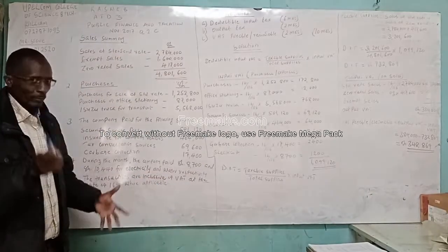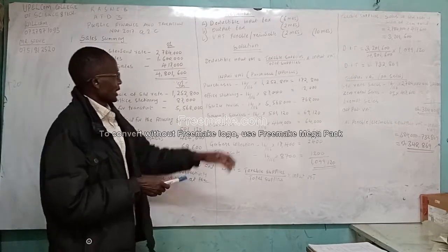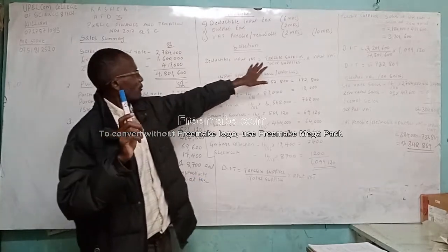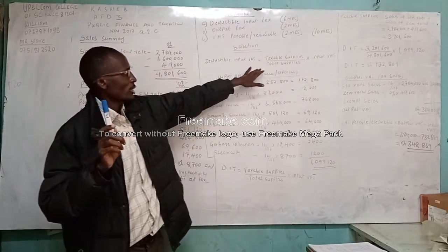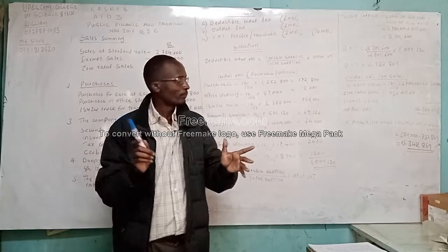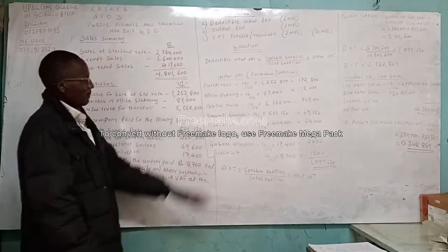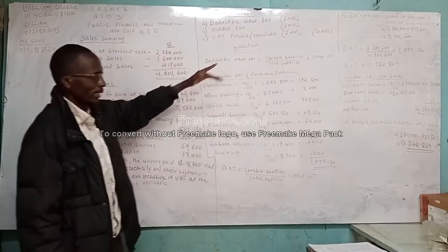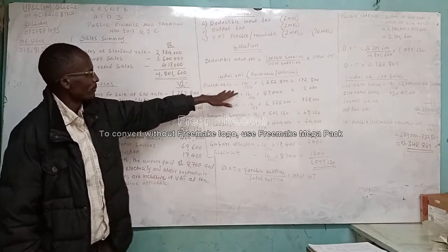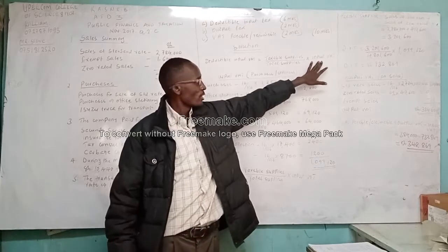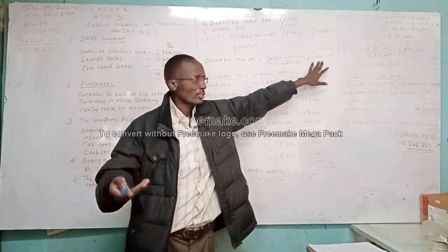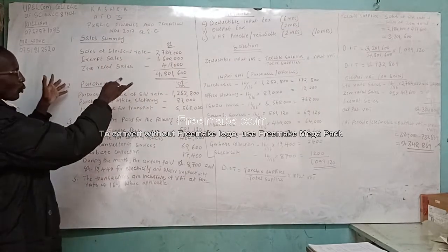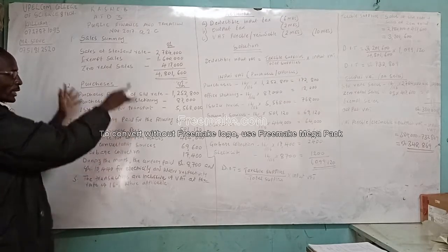Let's see how the student could have attempted the question to score the 10 marks. Start with deductible input VAT. The student is supposed to know the formula: taxable supplies over total supplies times input VAT. Now we come back to that formula in the next step. Let's see what is our input VAT, because in our formula we need input VAT. Remember, input VAT is based on purchases and expenses. For us to compute input VAT, you have to know which purchases and expenses are subject to VAT.